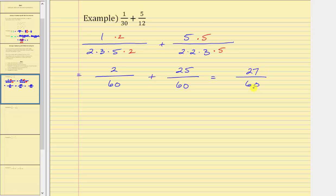This does simplify because 27 and 60 share a common factor of 3. To simplify, we divide the numerator and denominator by 3. 27 divided by 3 is equal to 9, and 60 divided by 3 is equal to 20. The simplified sum is 9 twentieths.